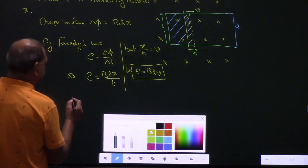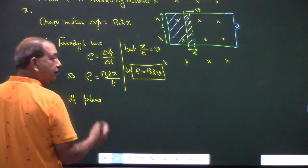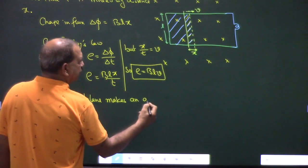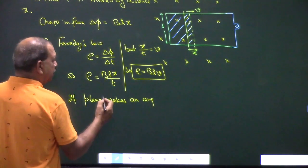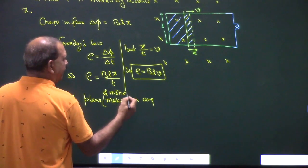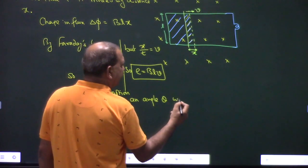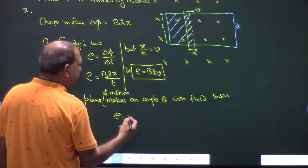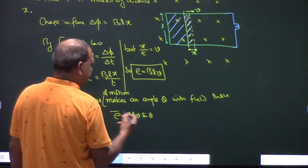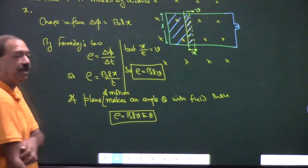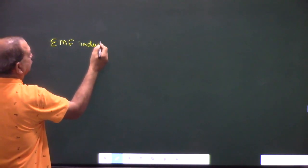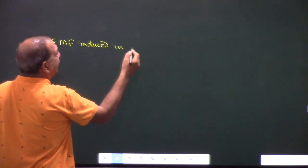Now, if the plane of motion makes an angle theta with the field, then E is equal to BLV sin theta. If theta is 90 degrees (perpendicular), then sin 90 equals 1. EMF induced in a rotating conductor.